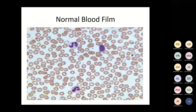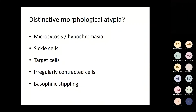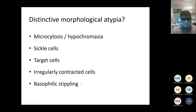A normal blood film shows nice normal red cells and normal white cells. When looking at morphology we ask: are cells microcytic hypochromic? Do we have sickle cells, target cells, irregular contracted cells, or basophilic stippling?